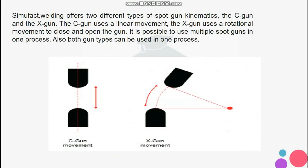Simufact Welding offers two different types of spot gun kinematics: the C-gun and the X-gun. The C-gun uses a linear movement; the X-gun uses a pivotal movement to close and open the gun. It is possible to use multiple spot guns in one process; also both gun types can be used in one process.